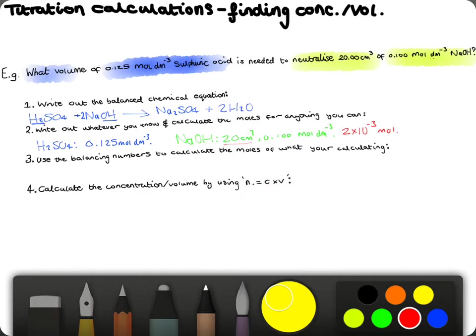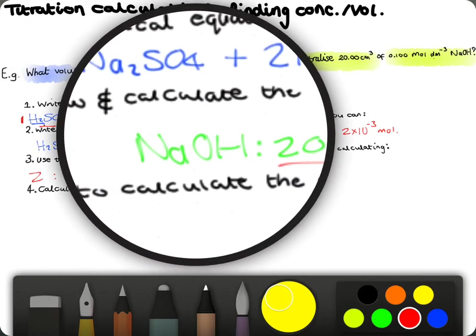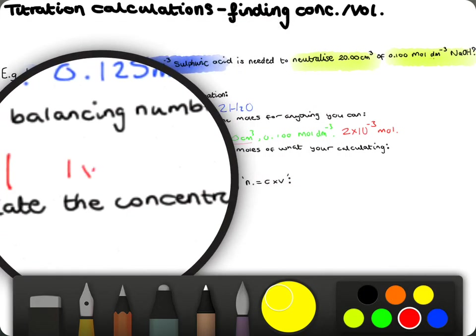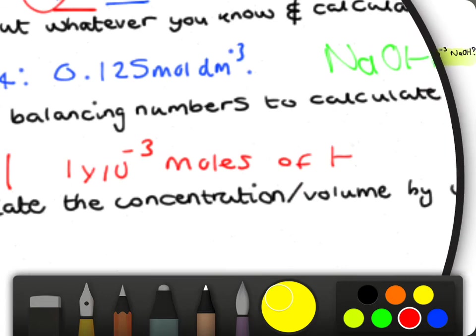So, the third step is, oh, I actually had more room than I thought. But for the third step, we use balancing numbers to calculate the moles of what we're calculating. So, we've got a ratio of 2 to 1, because look, there's 1 here, there's 2 here. So, 2 to 1 ratio means that we're going to have 1 times 10 to the minus 3 moles of sulfuric acid.